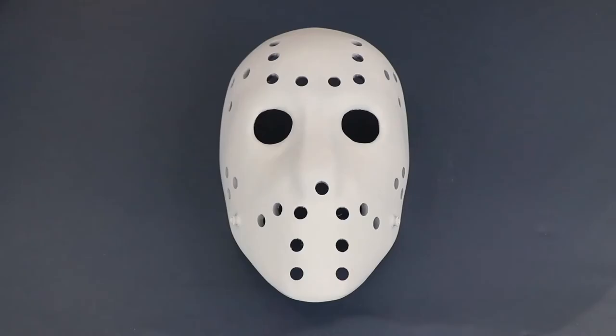Now that the mask is dry, the next step will be to paint the three red triangles. In order to do this, we're going to tape off the areas for the triangles and apply a few coats of red paint.